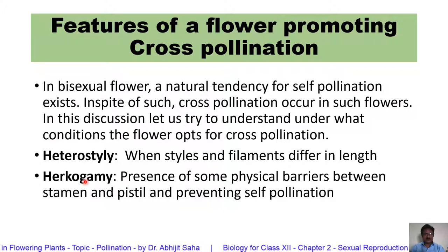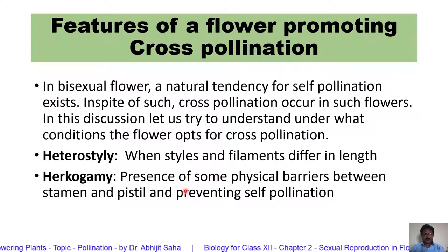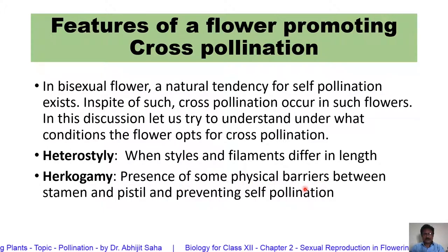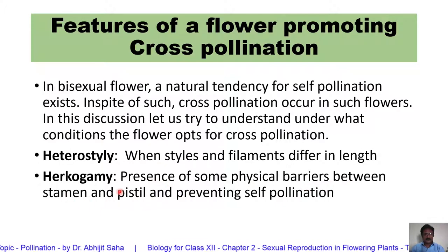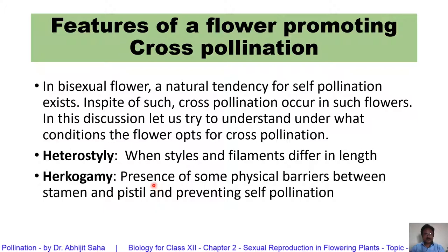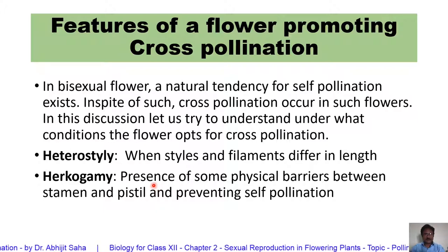Next is herkogamy. In herkogamy, certain physical barriers exist between the stamen and the pistil, due to which self-pollination is never possible, and the flower opts for cross-pollination.